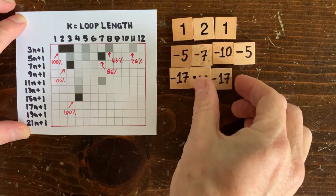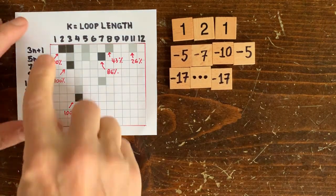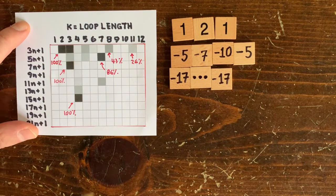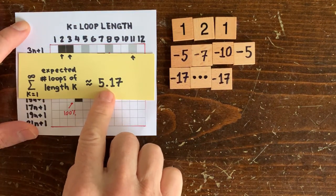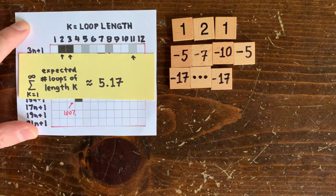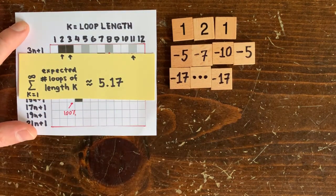we find another negative loop, which starts with negative 17. So that's the good news. The bad news is that when we sum up all the expectations in the first row from 1 to infinity, we get an estimated 5.17 loops total. And we found 3 actual loops, 1 positive and 2 negative.